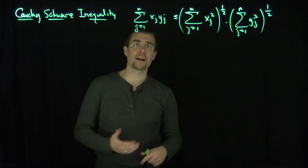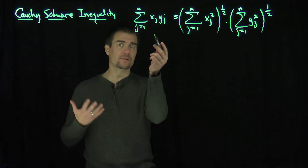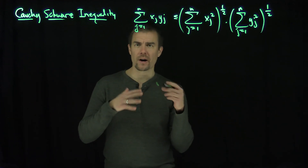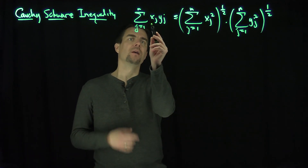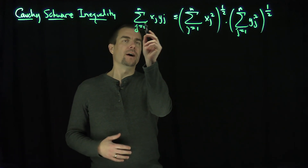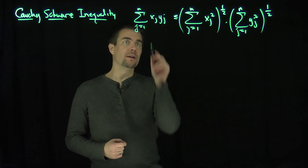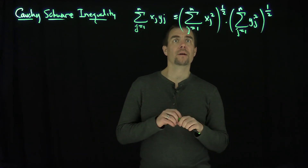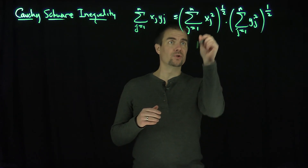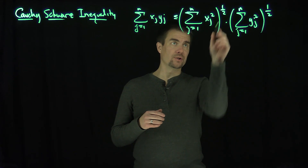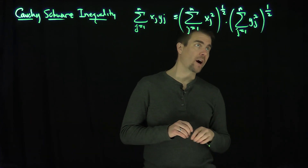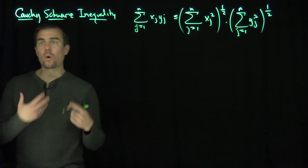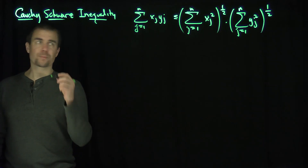Cauchy-Schwarz says that if I take the inner product of two vectors x and y — and for this problem we'll just assume that x and y are non-negative to make things a little bit easier — so if I do the sum from 1 to n of xj yj, that is no more than the sum of the squares of the xj's square-rooted times the sum of the squares of the yj's square-rooted. So we're going to prove this inequality using Lagrange multipliers.